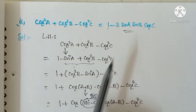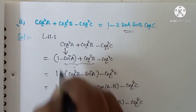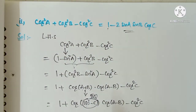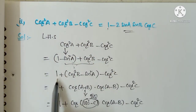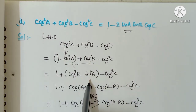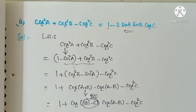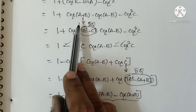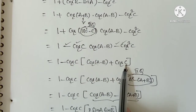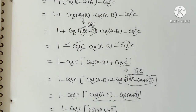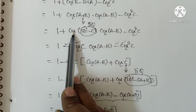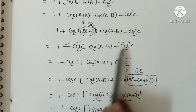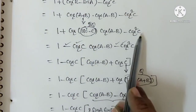So we have taken LHS and preferred to write 1 minus sin²A, replacing cos²A. Then 1 is positive, cos²B minus sin²C has the direct formula cos(A+B) cos(A-B). In three steps: A plus B is 180 minus C; for 180 degrees cos remains itself but in the second quadrant cos is negative, so negative into positive gives negative. Then minus cos²C. We take minus cos C as common, leaving cos(A-B) remaining. Then minus cos(A+B) inside.